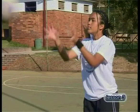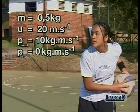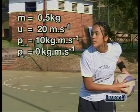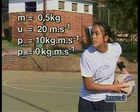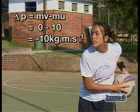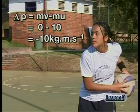Let's cement our understanding of the connection between impulse and change in momentum by calculating the impulse as well as the change in momentum on the netball when a player catches it. The netball player catches a ball of mass 0.5 kilograms traveling at 20 meters per second. Its initial momentum is 10 kilogram meters per second. She stops it dead, so its final momentum is zero.